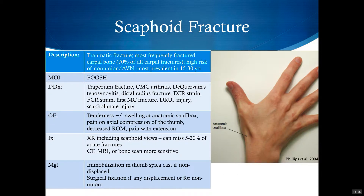Scaphoid fractures are also common in athletes and occur with the same mechanism as distal radius fractures. It's the most commonly fractured carpal bone, and because of its distal to proximal blood supply, scaphoid fractures have a high risk of non-union and avascular necrosis, so it's important to catch them early so that they can be properly treated. The highest prevalence is in the 15 to 30 year old population, which overlaps with a lot of the sport medicine population. Any athlete with the right mechanism and radial wrist pain and tenderness in the right area should be considered to have a scaphoid fracture until proven otherwise.